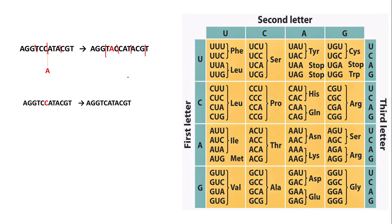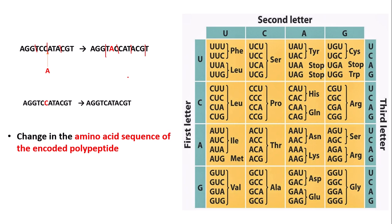With a deletion the amino acid sequence also changes quite a lot. There's a change in the amino acid sequence of the encoded polypeptide, which leads to a change in the primary structure and therefore tertiary structure and therefore the function of the protein.